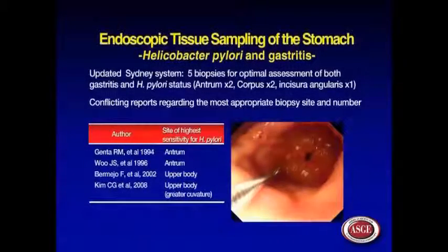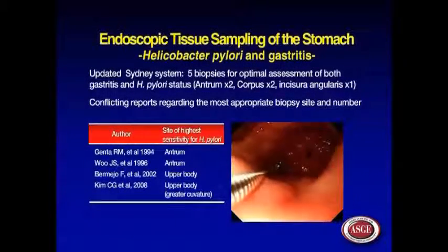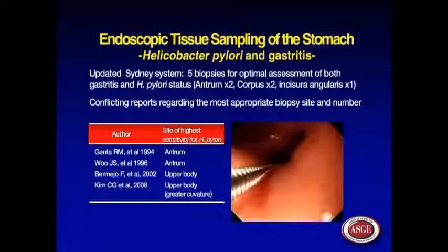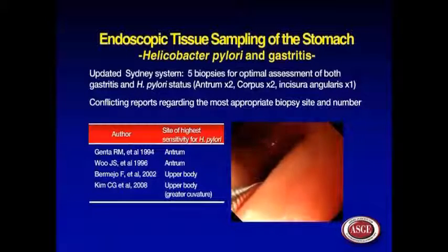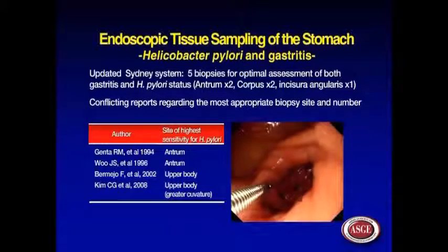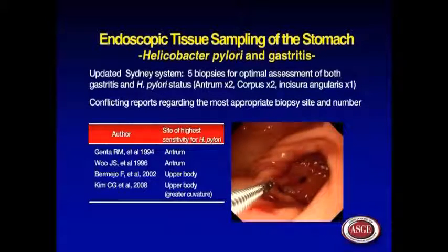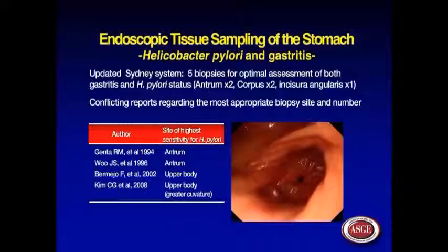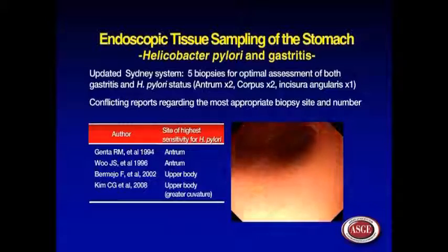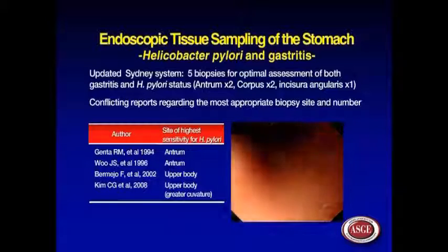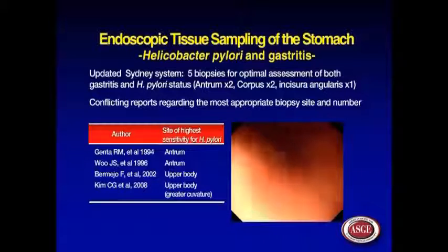The updated Sydney system recommends that biopsy specimens be taken at five different sites for optimal assessment of both gastritis and H. pylori status. There have been conflicting reports about the most appropriate biopsy site for detecting H. pylori, including the lower body.